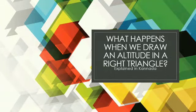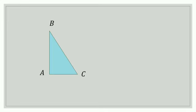What happens when we draw an altitude in a right angle? Triangle ABC is a right angle triangle, right angle at A.